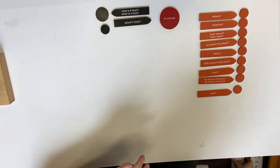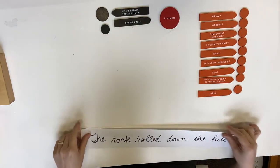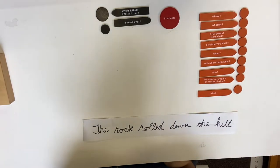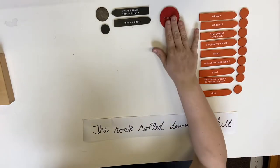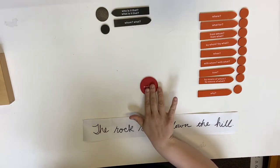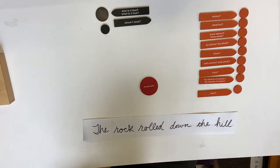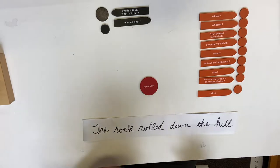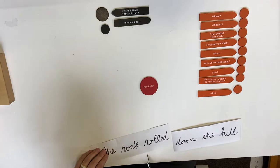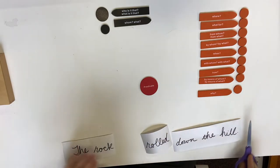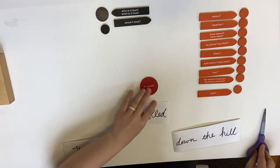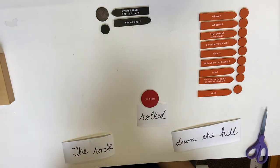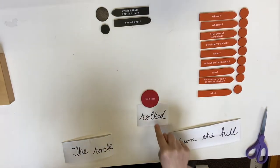Okay, so I have a sentence for you: 'The rock rolled down the hill.' Remember, the first thing we're always looking for is a predicate — our action in the sentence. In 'the rock rolled down the hill,' what is our action? Rolled. So I'm going to cut that out and put it here. The predicate is rolled.